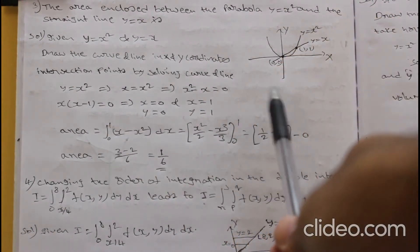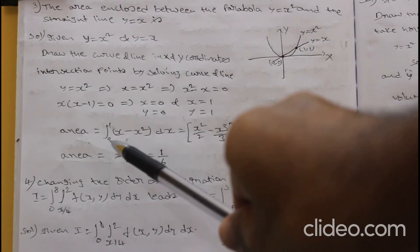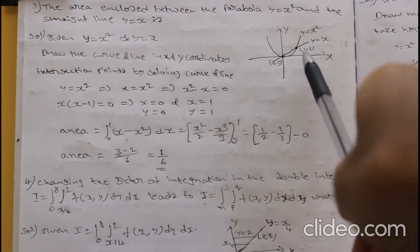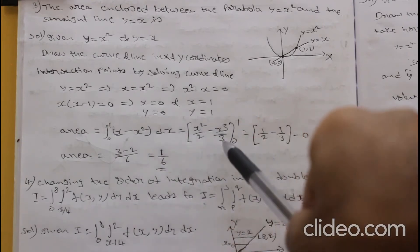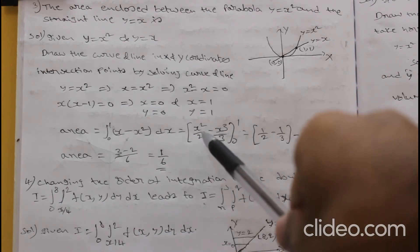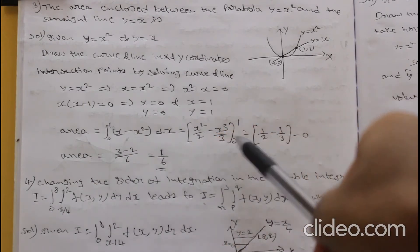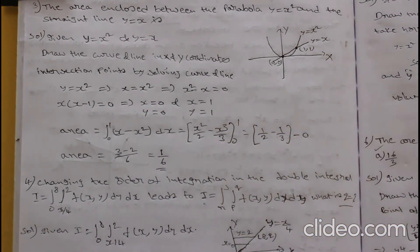Area = ∫₀¹ (x - x²) dx = [x²/2 - x³/3] from 0 to 1 = 1/2 - 1/3 = 3/6 - 2/6 = 1/6. So the area is 1/6.